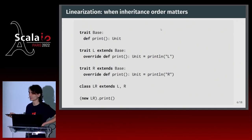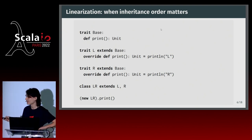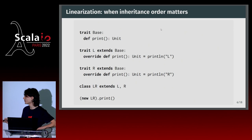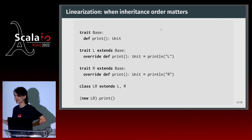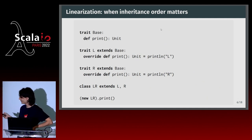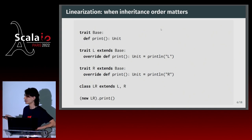Here's an example. I have a base trait with a print method, then two traits L and R that both implement it — one prints L, the other prints R. Then I have a class that extends both. This is valid Scala but not valid Java, which would complain about two overrides. In Scala it's fine. But then — what does it print? It prints R, because you get the last implementation when there's a conflict.